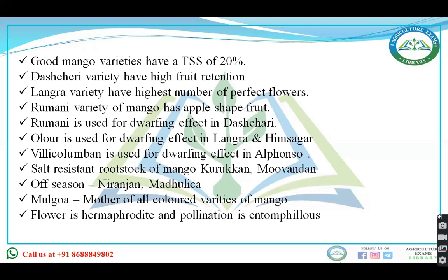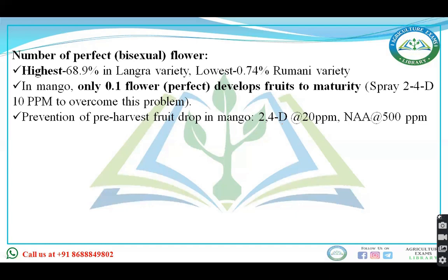The flower in mango is hermaphrodite and pollination is entomophilous. Langra variety has the highest number of perfect flowers and the Romani variety has the lowest. In mango crops, only 0.1% of the perfect flowers develop into fruits.